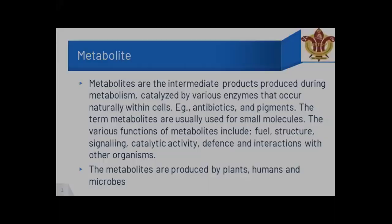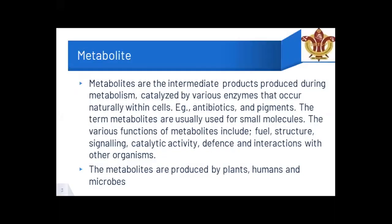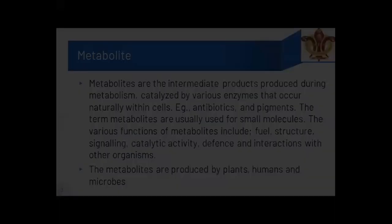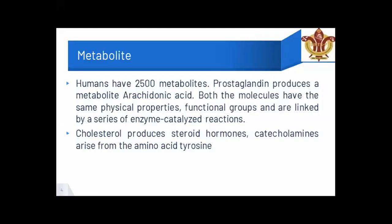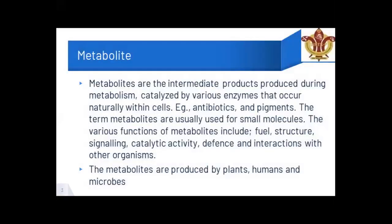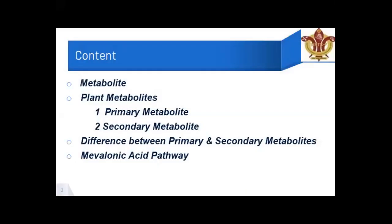Metabolites are the intermediate products produced during metabolism. We are going to discuss about plant metabolites. There are two types: primary metabolites and secondary metabolites. We will discuss the difference between primary metabolites, secondary metabolites, and the mevalonic acid pathway.